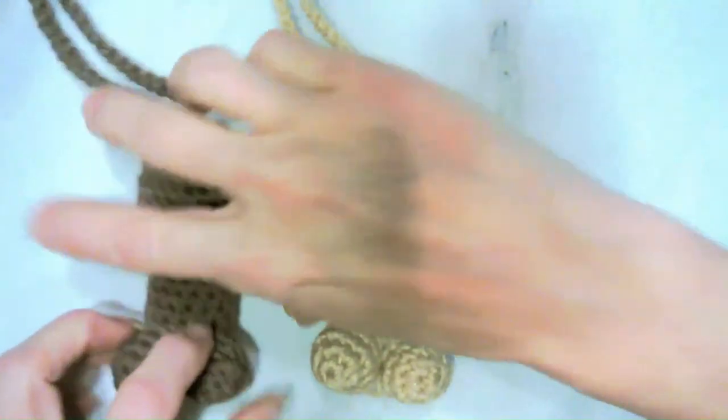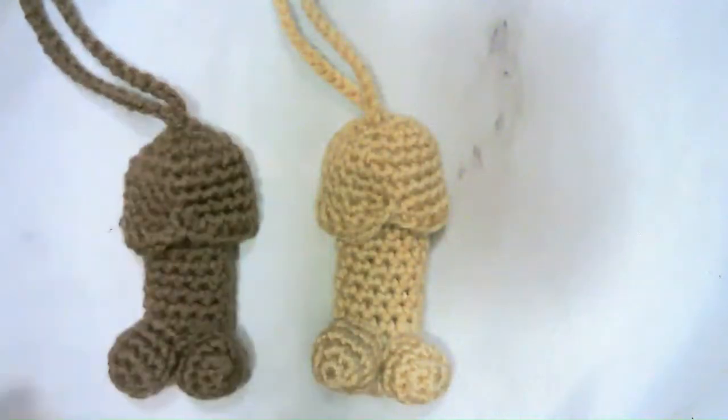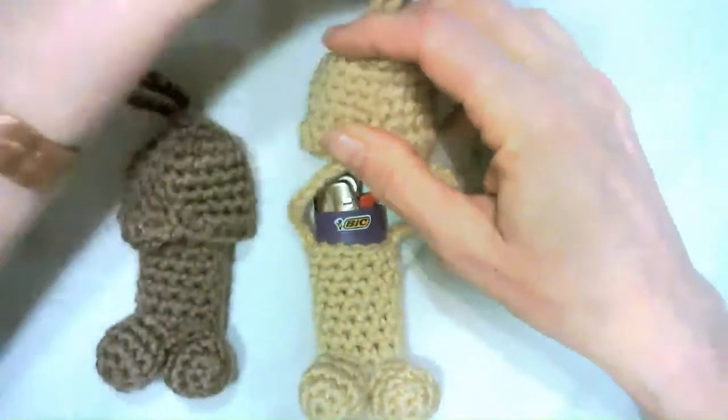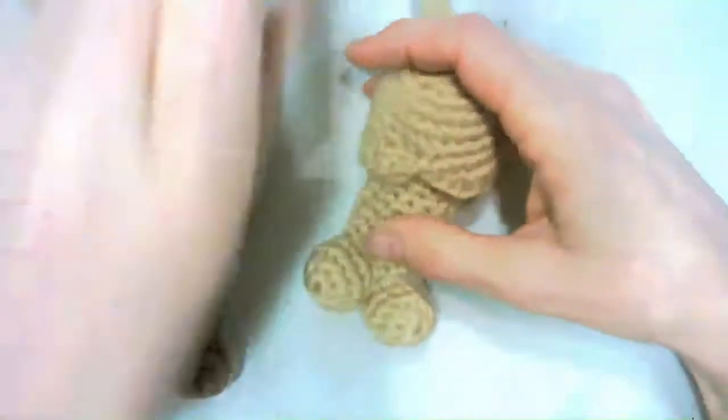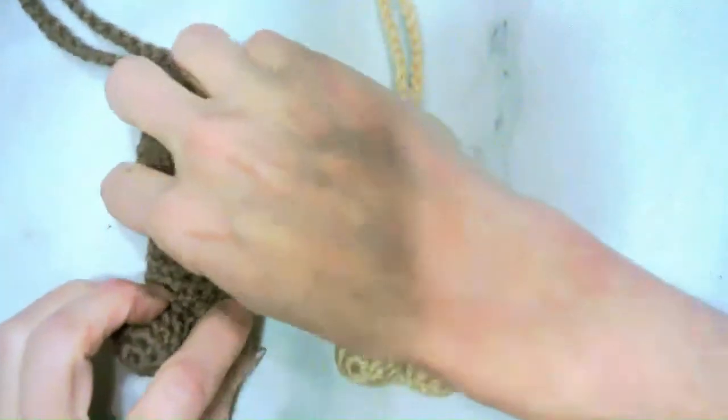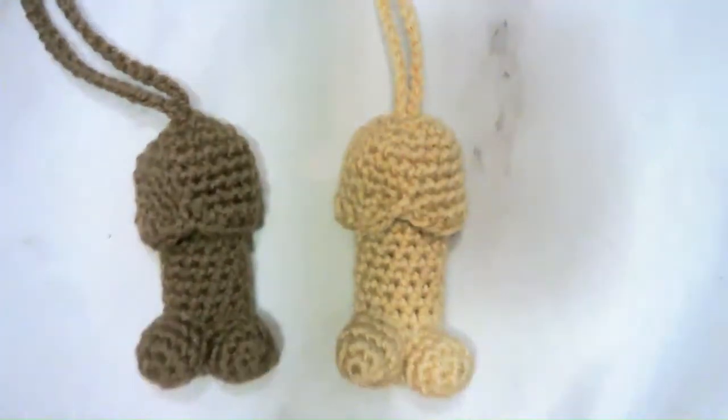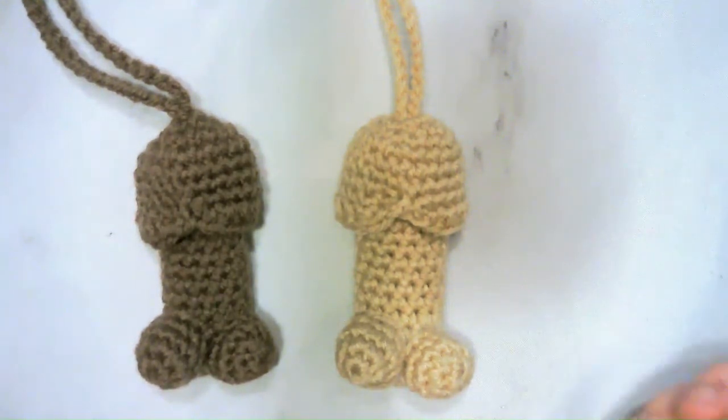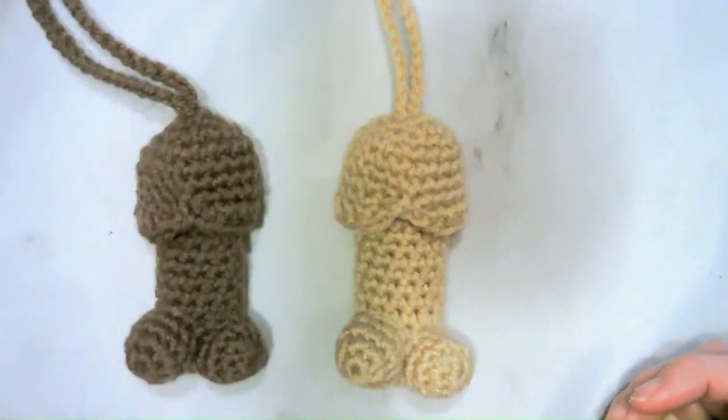Welcome to Brightest Rain Crochet. Today we are doing a penis lighter holder. The pattern is from Cassandra Shaw. I will put the Etsy link to the pattern if you guys would like it, but we'll go step by step through this. Thanks again for joining us.